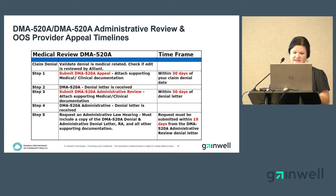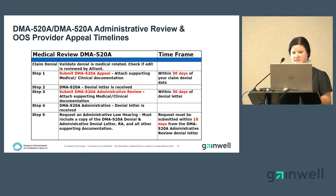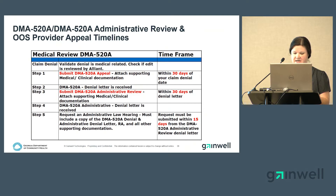This shows your appeal timeframes: from a denied claim you have 30 days to request an appeal; from a denied appeal you have 30 days to request an administrative review; and from a denied administrative review you have 15 days to request an ALJ hearing.